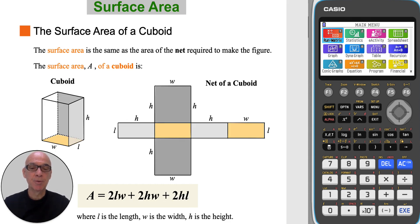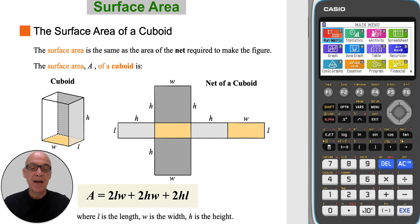The net of a cuboid is shown in this diagram. The surface area of a cuboid is equal to 2 times LW, plus 2 times HW, plus 2 times HL, where L is the length, W is the width, and H is the height of the cuboid.